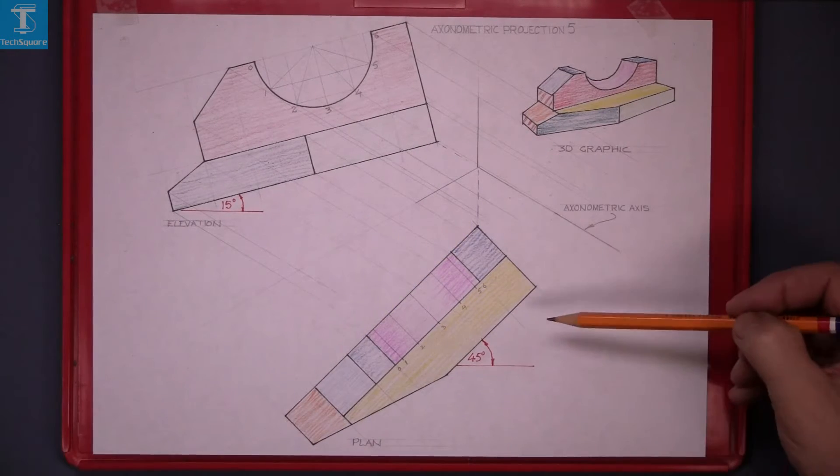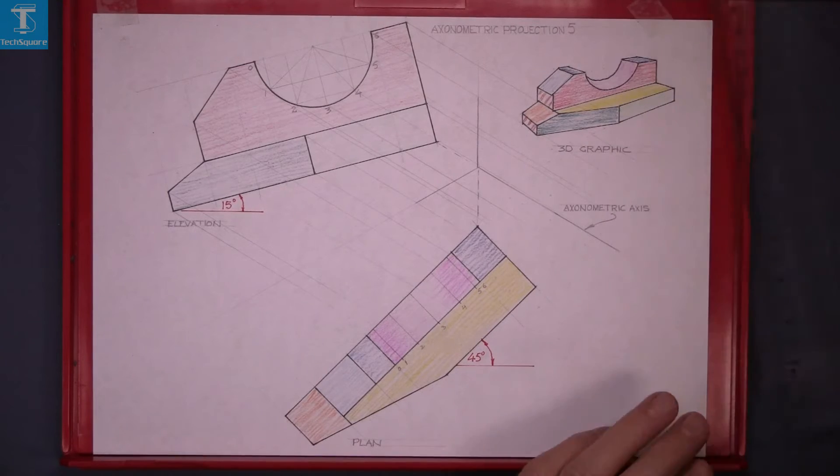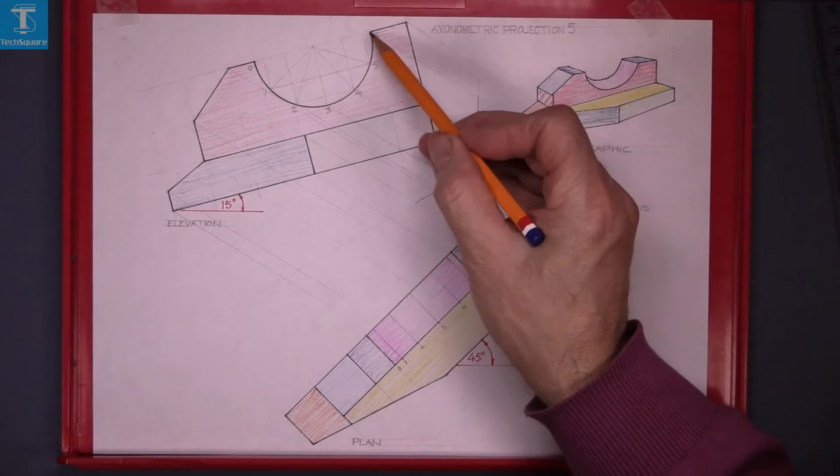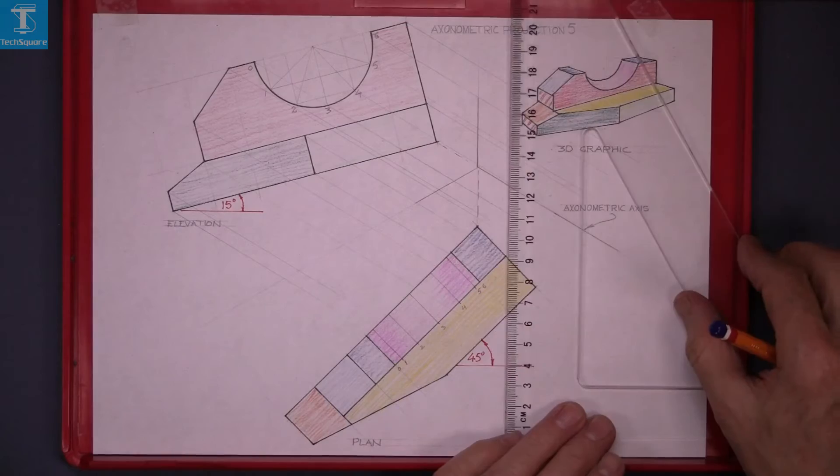And now we draw vertically up from the points in the plan. So we're looking for the top of this piece here, that's it there and that's it in plan. So bring the four points up from the plan.